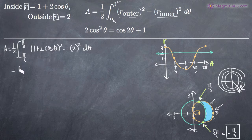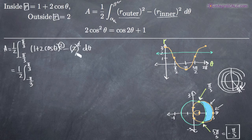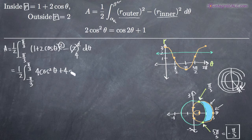Now we simplify this integral before integrating. When we multiply out 1 plus 2 cosine theta squared, we get 4 cos squared theta plus 4 cosine theta plus 1. The 2 squared becomes minus 4. Combining those constants, plus 1 minus 4 gives minus 3. So we have 4 cos squared theta plus 4 cosine theta minus 3, d theta.